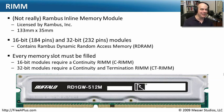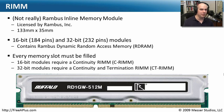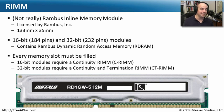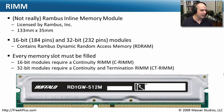RIMM was faster and improved over SIMM technology, but not a lot of companies licensed it, so it ended up not being extremely popular. It's very difficult to see this type of memory in newer systems today. Although the company Rambus still exists and licenses various technologies, you will occasionally see RIMM memory in legacy systems. You could still buy it on the market, but it's really expensive now — you could almost buy a new computer for what memory sticks for RIMM cost these days.